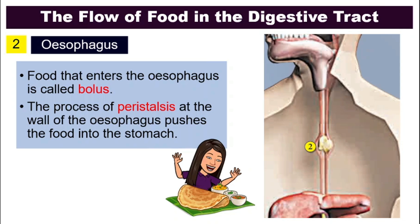So what is peristalsis? Take a look at the esophagus. There is a bolus here, and this is how it moves: one part of the esophagus will contract, and then that part relaxes making the food go down. When the food moves further down, the part above contracts again and pushes it down as the lower part relaxes. This constriction and relaxation happening on and off pushes and squeezes the food through the esophagus — that movement is called peristalsis.